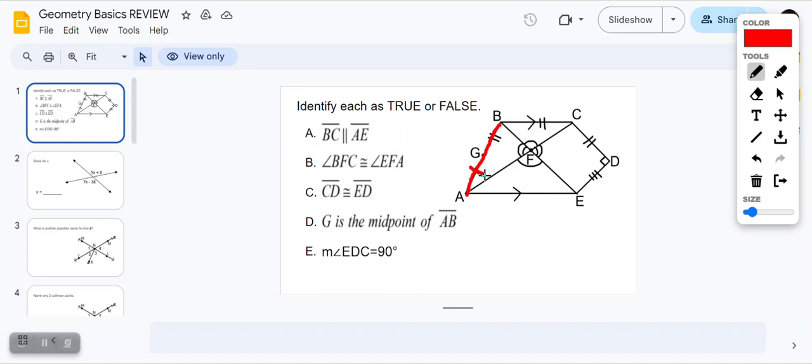But our line markings say that this side is congruent with, has the same length as some other side. Since the hash marks are different, one and two, they're not equal to each other. And if they're not equal, then G didn't split it in half. So it's not the midpoint.